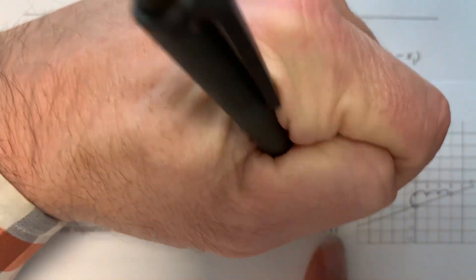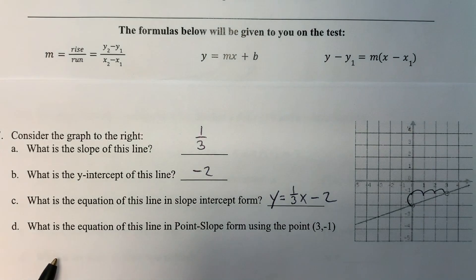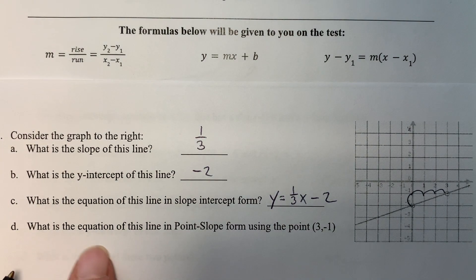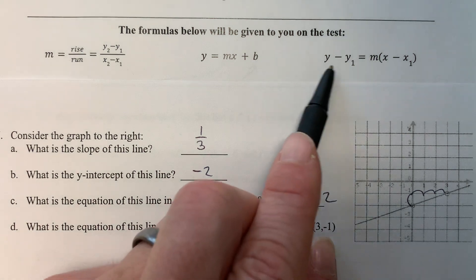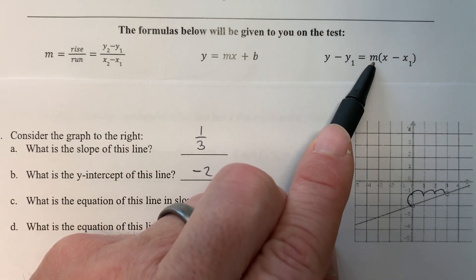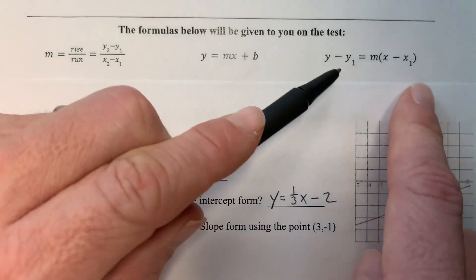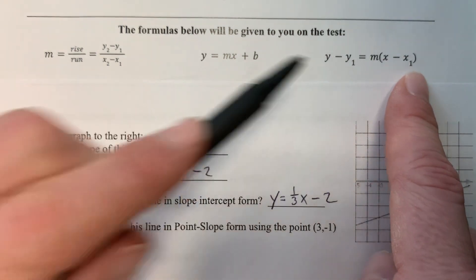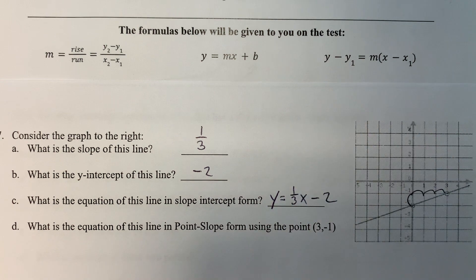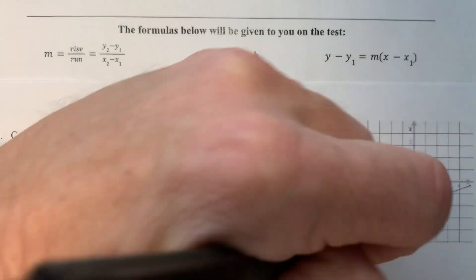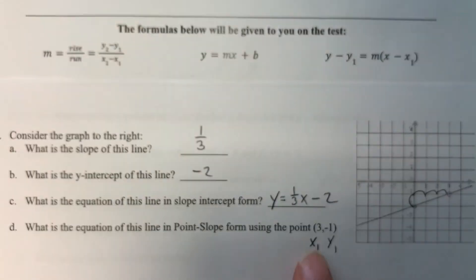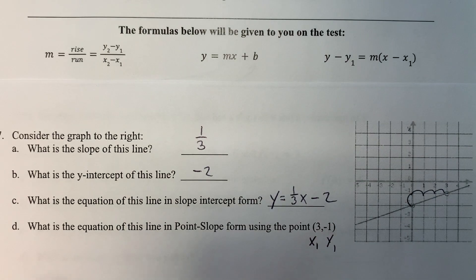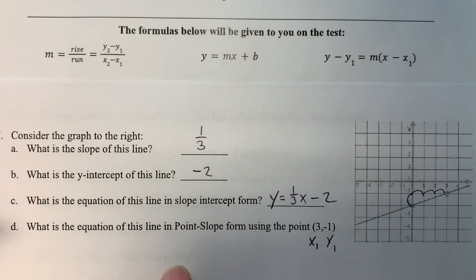Now finally, they're asking what is the equation of this line in point-slope form using this point. Point-slope form is this one because this gives us the information for the slope, and this right here is that other point. That point right here—this is our first x value and this is our first y value—so that'll be our x₁ and our y₁. Now we can use this to finish part d.